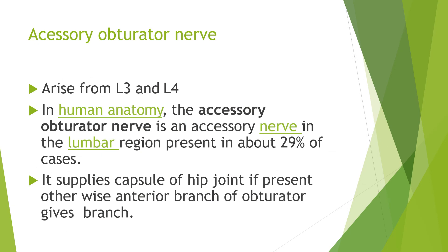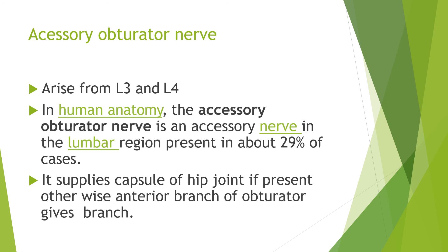The accessory obturator nerve arises from L3 and L4. It is an accessory nerve present in approximately 29% of cases. When present, it supplies the capsule of the hip joint. If absent, the anterior branch of the obturator nerve supplies the capsule of the hip joint.